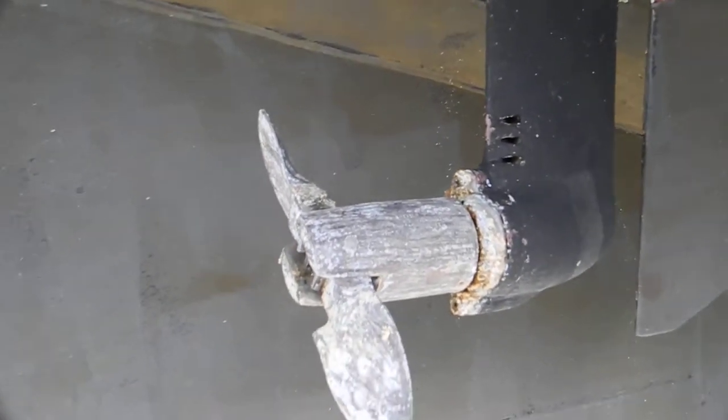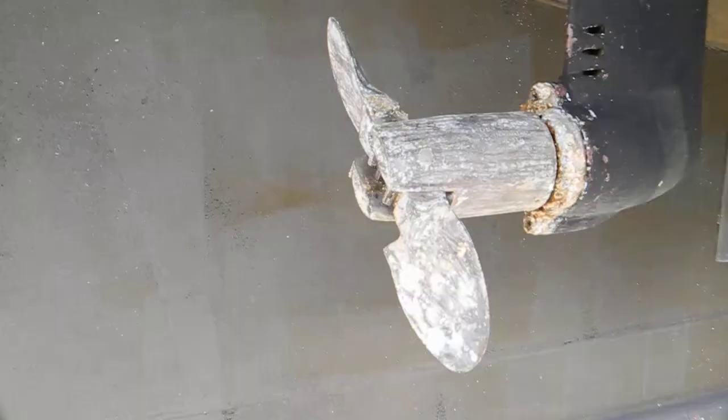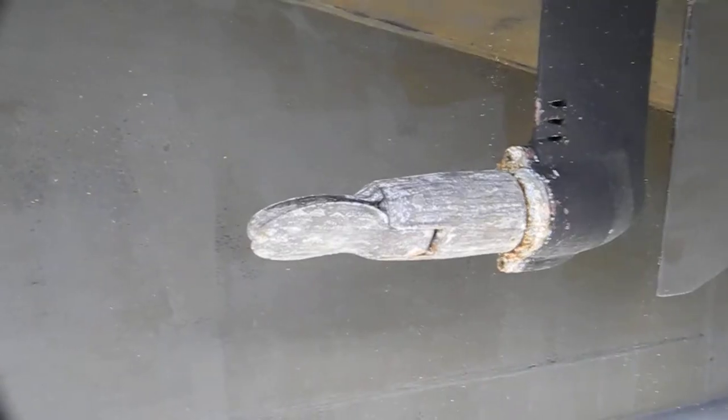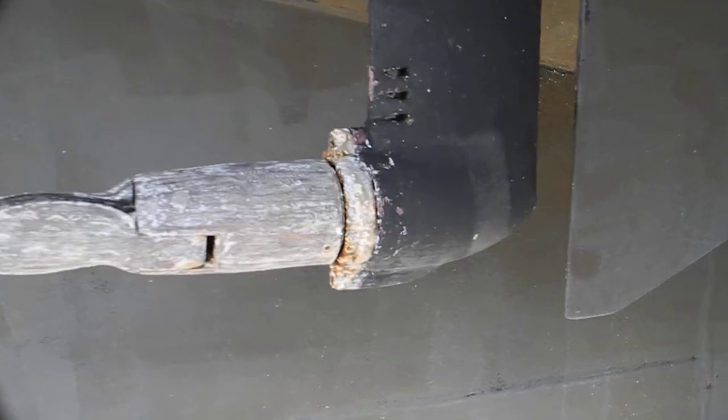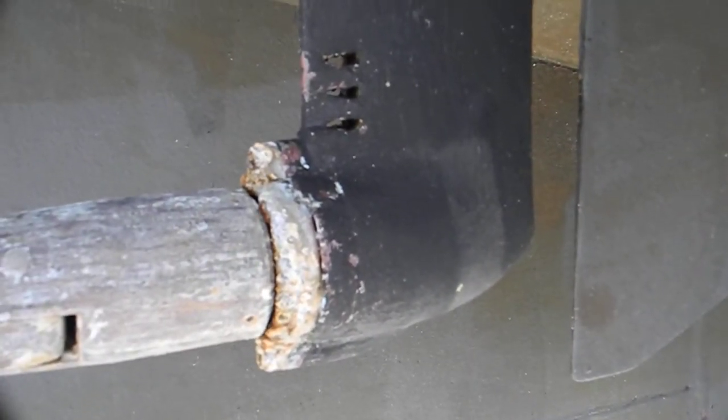So when you're running the boat with the major or the primary propulsion system there, this will feather, meaning these will actually fall back and not create any drag, and will not rotate chewing up the gears or the oil inside the gear case right here.